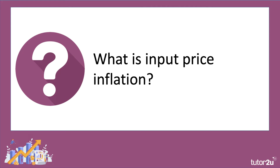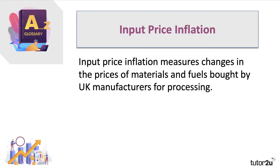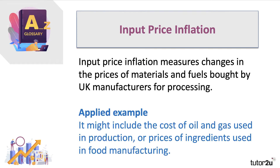A couple of definitions first. Input price inflation is a measure of inflation in the prices of materials and fuels bought by UK manufacturers for processing. For a food manufacturer, for example, input price inflation would include the changing cost of oil and gas used in production, or simply the world price of ingredients used in food manufacturing.